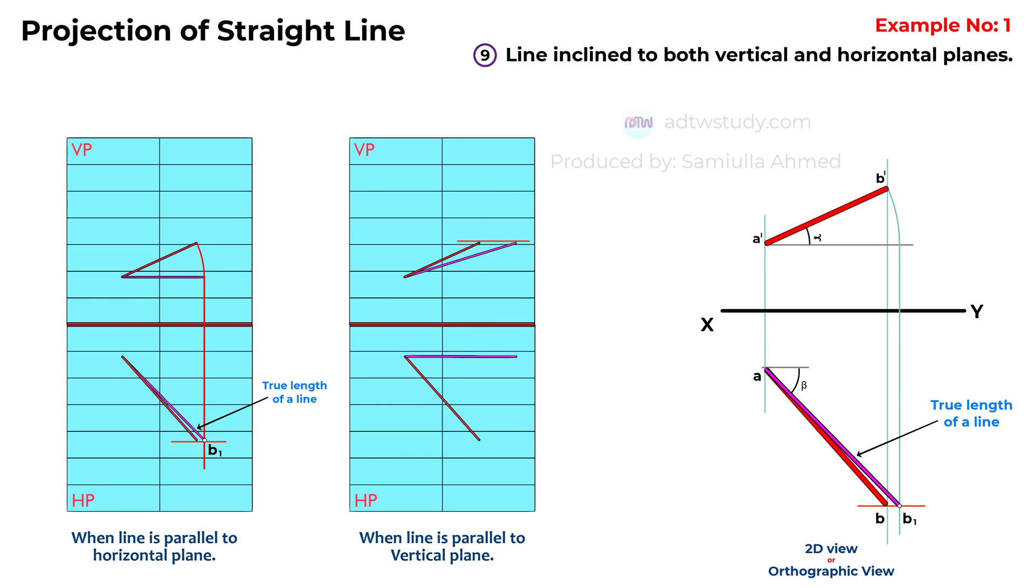This line represents the true length. When we adjust the line to be parallel to the horizontal plane, the imaginary line's inclination changes, showing the angle it makes with the vertical plane, which we'll call phi.